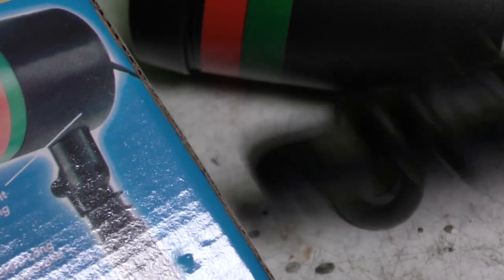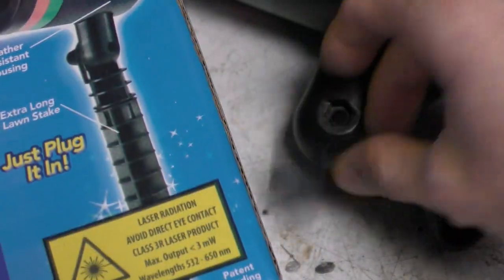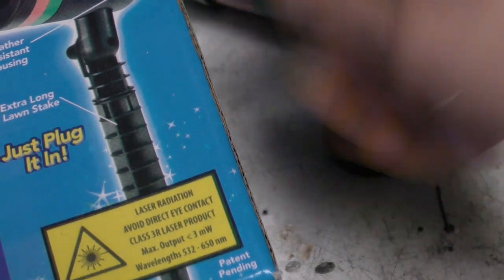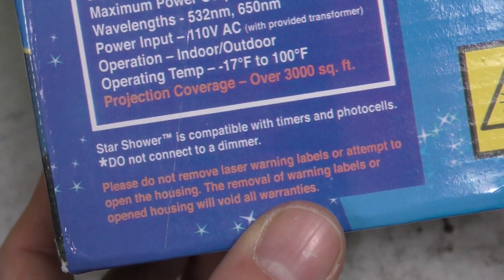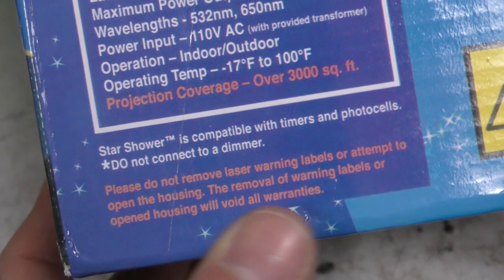It comes with this stake so you literally just stick it in the garden, put this screw in, stick it in the garden, point it and away you go. Please do not remove laser warning label or attempt to open the housing. The removal warning label and housing will void all warranties. Well, what warning?